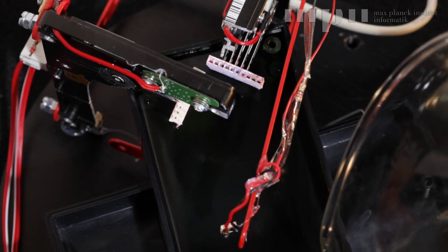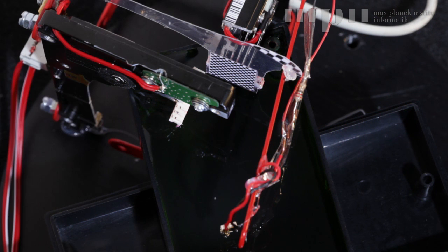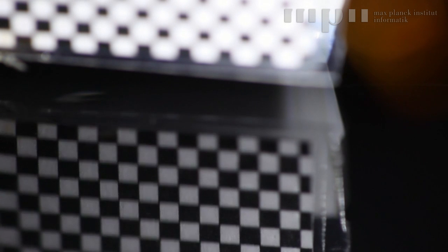We demonstrate this using the reflection of a checkerboard pattern in the water surface. By adjusting the amplitudes, the reflection is blurred horizontally, vertically, and finally in both directions.